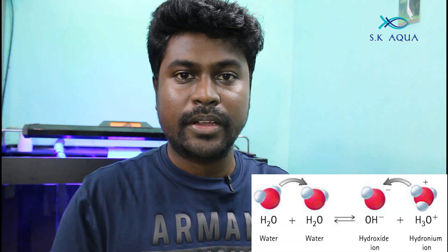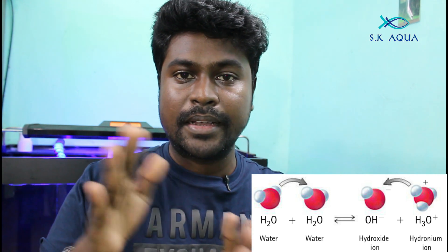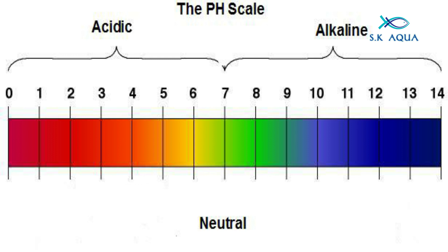Now, what is pH? pH stands for the potential of hydrogen. In the water, there are hydrogen ions. Based on those hydrogen ions, you can say whether water is alkaline or acidic. We use a scale from 0 to 14. On this scale, 7 is neutral — below 7 is acidic water, and above 7 is alkaline water.